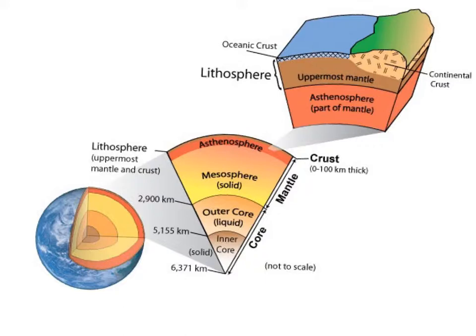The first two we're going to look at are the inner core and the outer core. The inner core is a dense ball of solid metal. Its extreme pressure squeezes the atoms of iron and nickel so much that they can't spread out and become liquid. The outer core, however, is a layer of molten metal that surrounds the inner core.